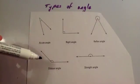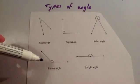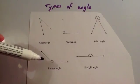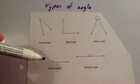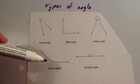An angle that's bigger than 90 degrees but less than a straight line — less than 180 — is called an obtuse angle. So that's bigger than 90 but less than 180.